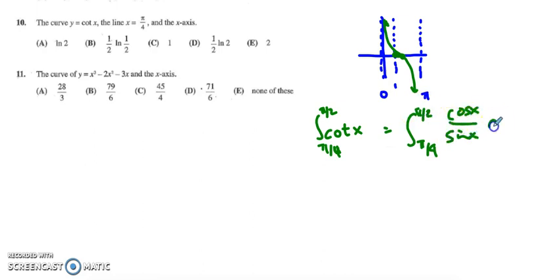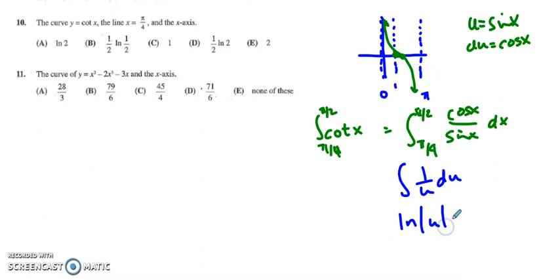because then I can do u substitution with my u as sine and my du as cosine. So what I've really got here is the integral of 1 over u du which integrates to the natural log of the absolute value of u